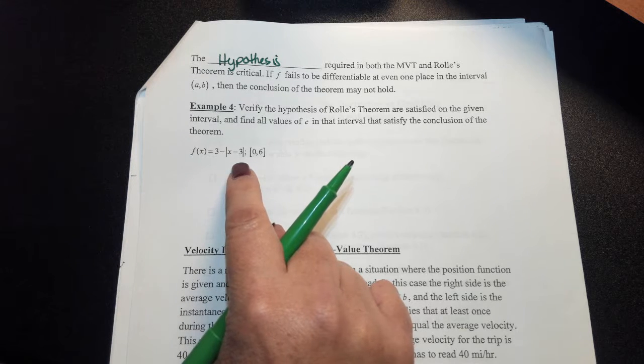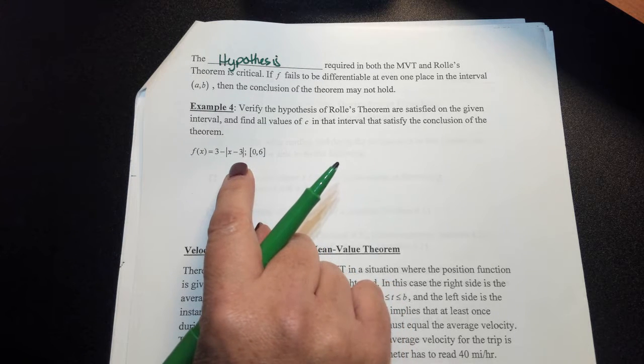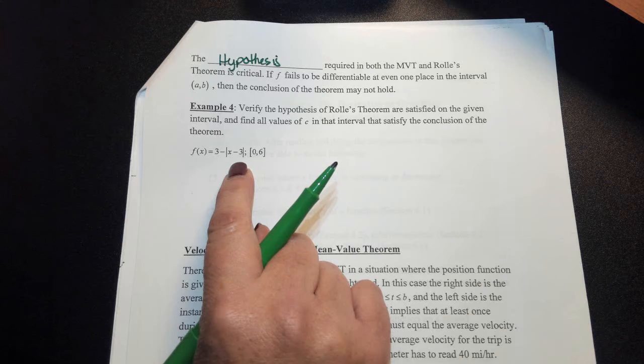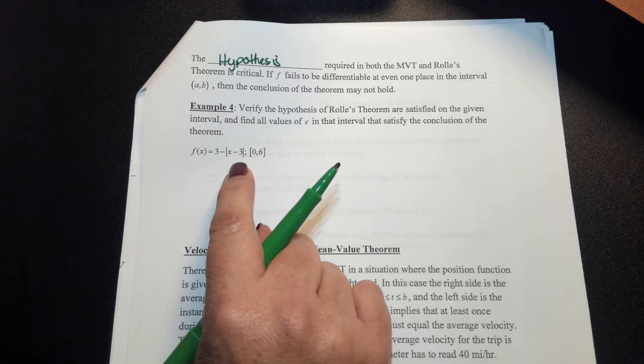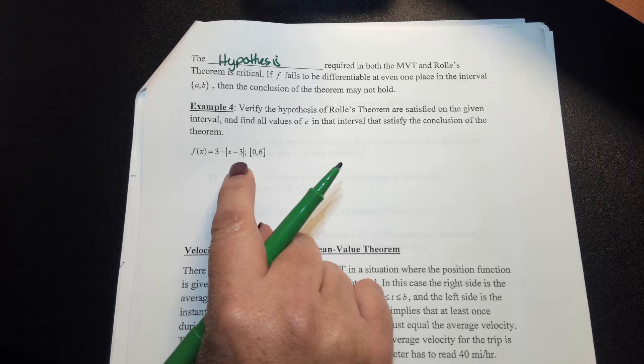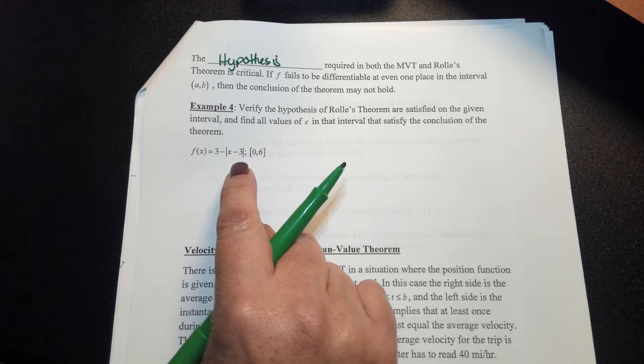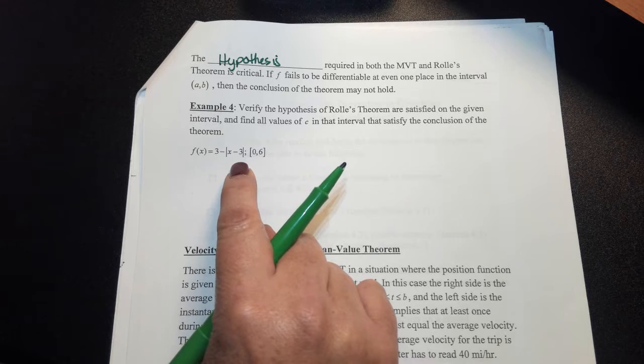Think about what type of function absolute value is. We know absolute value is continuous for all real numbers. However, there is a place where your absolute value function is not differentiable, and that's at the what? Do you know what we call it? The vertex. The vertex, exactly, the vertex or the cusp, exactly.